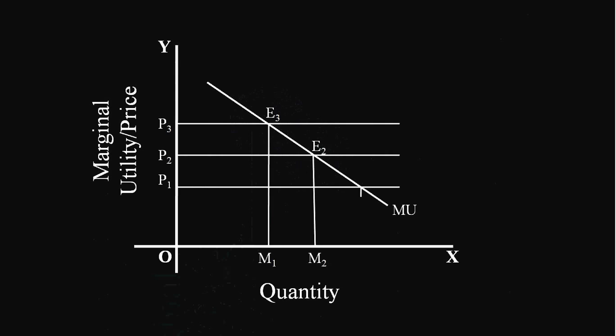Let us assume the price falls to P1. The consumer increases consumption to M3 and reaches equilibrium at E1. E1 is a point on the demand curve — at P1 price, the consumer buys M3 quantity. E3, E2, E1 are points lying on the demand curve as well as on the marginal utility curve, showing that as the price falls the consumer buys more. So the marginal utility curve is the same as the demand curve, confirming the demand curve slopes downwards from left to right because of the law of diminishing marginal utility.